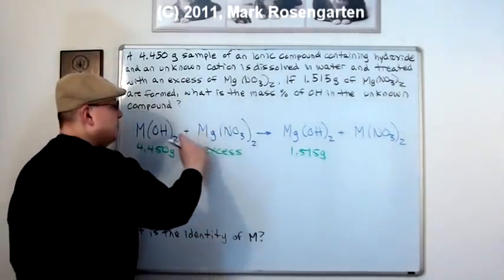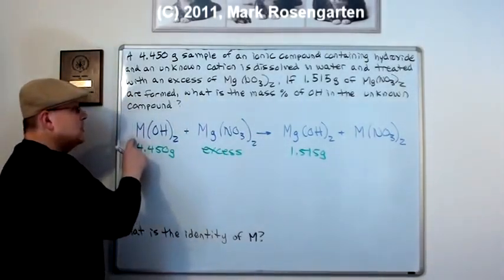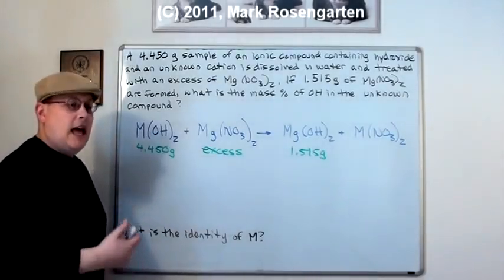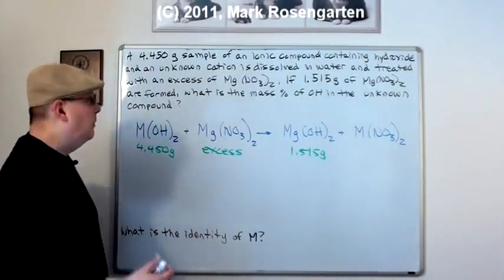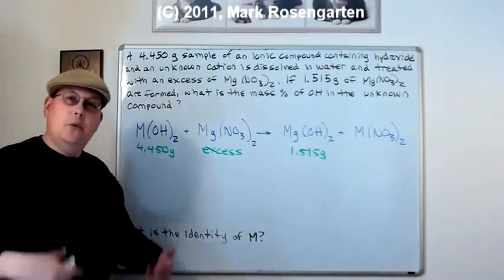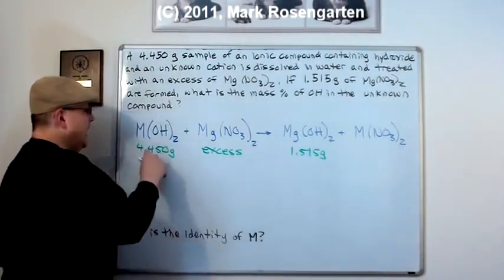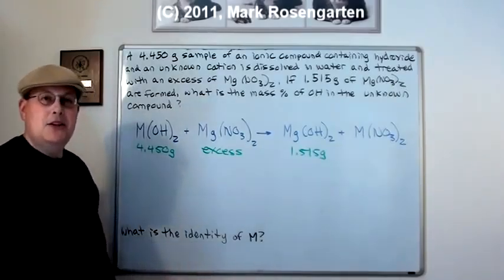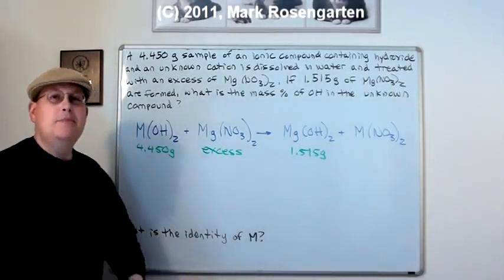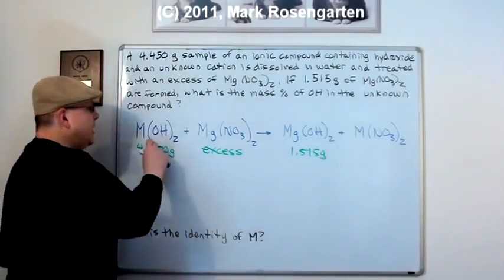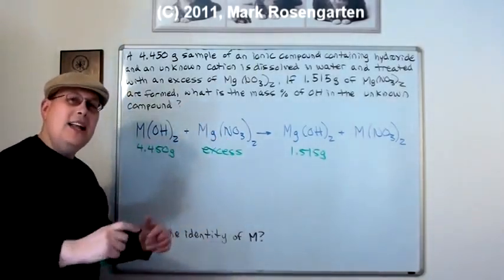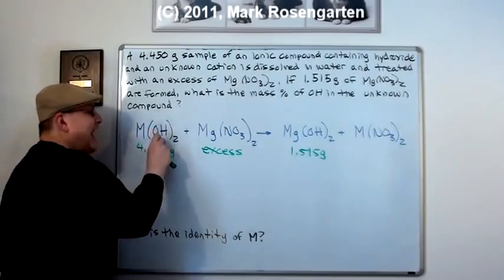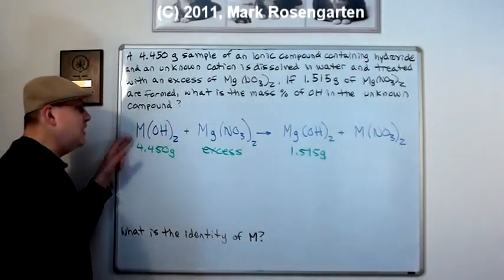You see, there are 4.450 grams of metal hydroxide. The question that comes after tells me that the formula of this metal hydroxide is M(OH)2. And when I react that with an excess of magnesium nitrate, I form 1.515 grams of magnesium hydroxide. And the amount of metal nitrate is completely inconsequential.